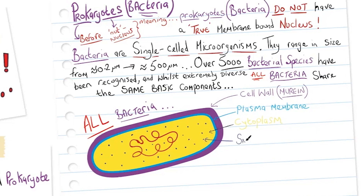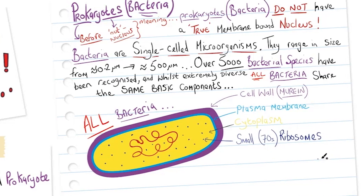Within the cytoplasm we have lots of small, sometimes referred to as 70S ribosomes. The S is a unit of density, a Svedberg unit, which shows that they are smaller than in eukaryotes.